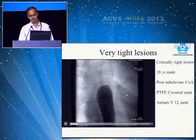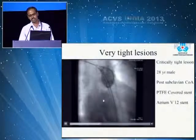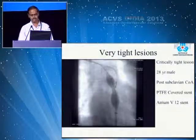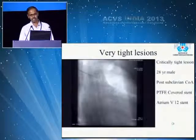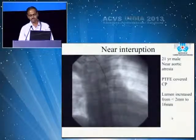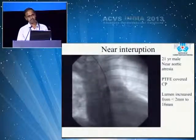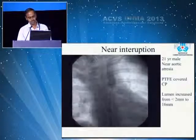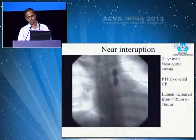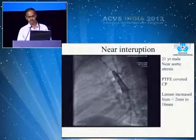Sometimes there are extremely tight coarctations where you may have to pass the wire from the top because you cannot cross from below, then snare it from below. Again, a radial access pigtail catheter is used to localize the coarctation. Here we use an ADVANTA V12, which is another PTFE covered stent. Sometimes tight lesions can be near-interruptions — when injecting, hardly any dye goes below. In these cases, a very cautious low-pressure balloon dilatation may be needed to create a space for the sheath, followed by a covered CP stent to prevent rupture.